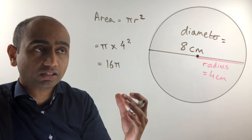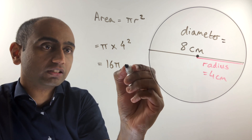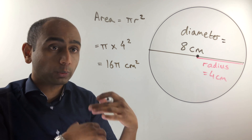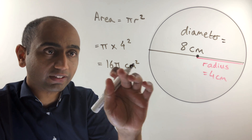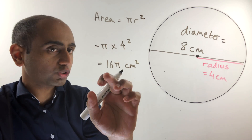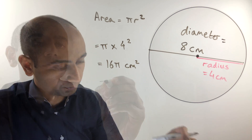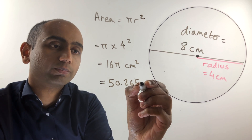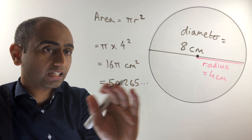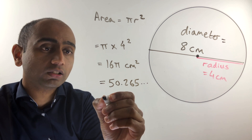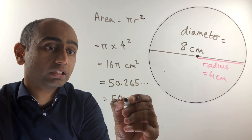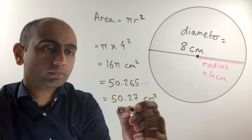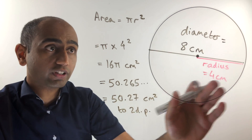So 16 pi is the exact answer, and the units are centimeters squared. If we wanted a numerical answer we would type 16 times pi into our calculator. Doing that we get 50.265... and rounding to two decimal places we get 50.27 centimeters squared. So that's the area of this circle.